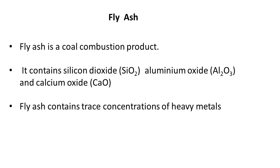Fly ash is a coal combustion product containing silicon dioxide, aluminum oxide, and calcium oxide. Fly ash is dangerous to the environment because it contains heavy metals. Just as mercury causes Minamata disease, many other heavy metals cause various diseases — so remember these key points about fly ash.